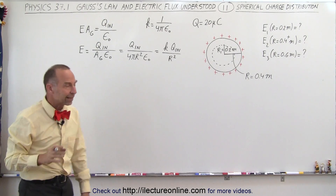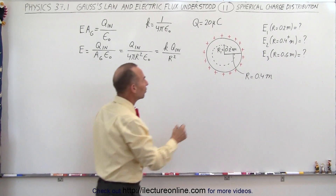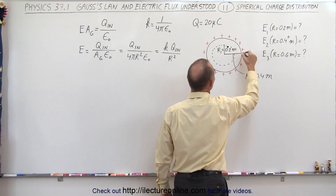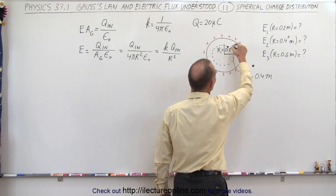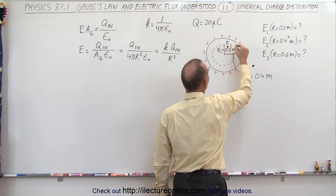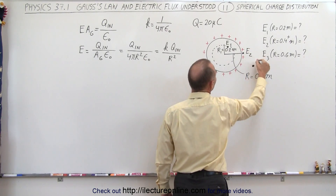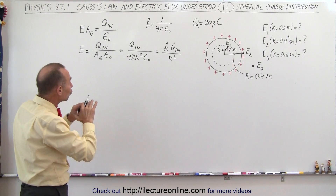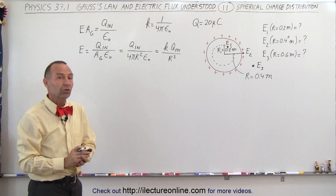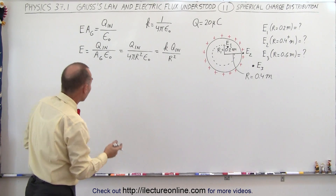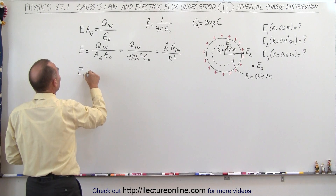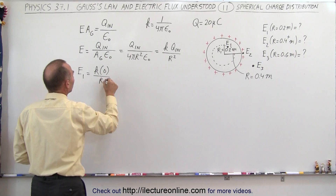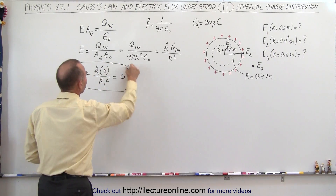We're going to find the electric field at all three locations: 0.2 meters, just outside the surface, and 0.6 meters — E1, E2, and E3 respectively. For E1, there's no charge enclosed at all within that Gaussian surface. So E1 equals K times 0 divided by R1 squared, which is simply equal to 0.